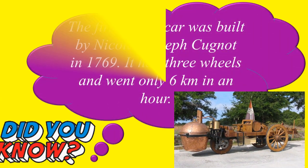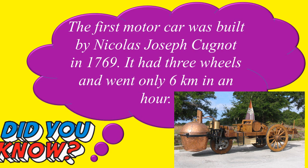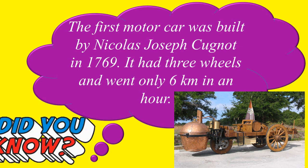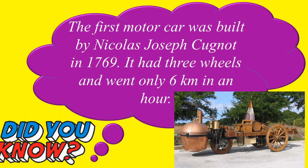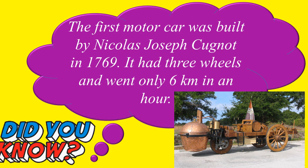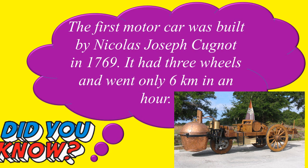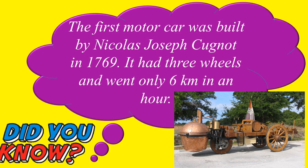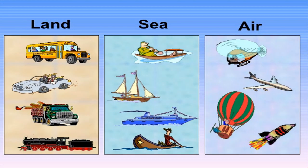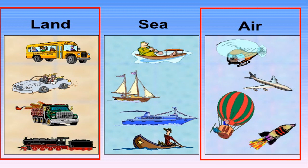Did you know the first motor car was built by Nicholas Joseph Cugnot in 1769? It had three wheels and went only six kilometers an hour. There are three types of transport: land transport, air transport, and water transport.